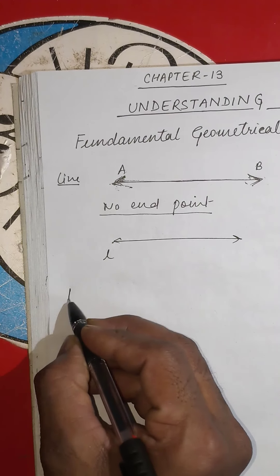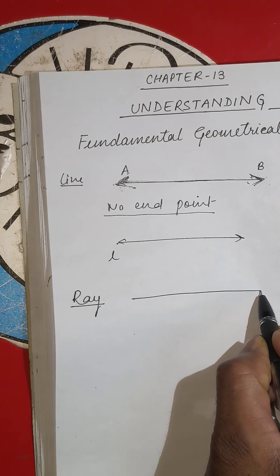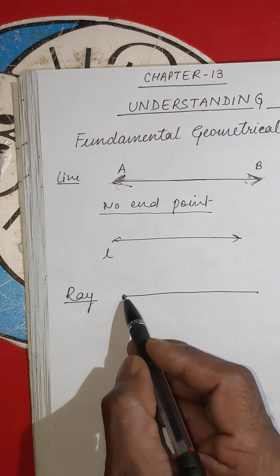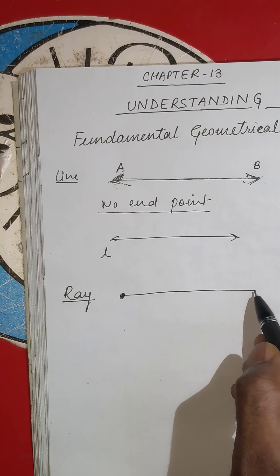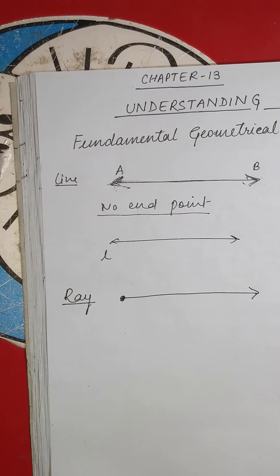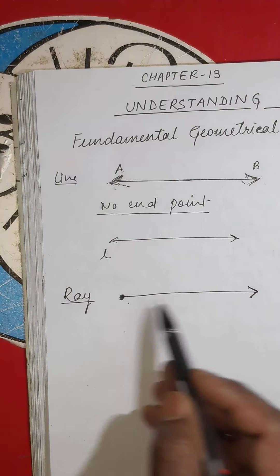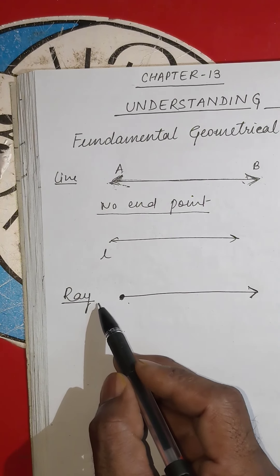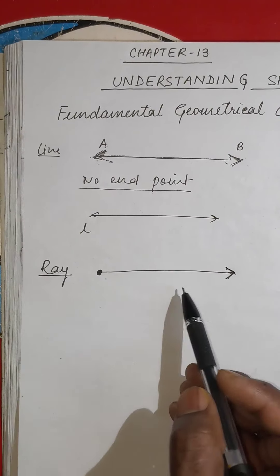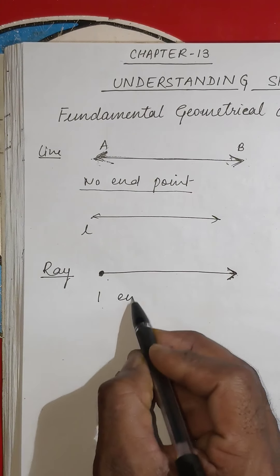The second concept is a ray. A ray is a straight line that starts from a fixed point and extends indefinitely in one direction. So a ray has one end point, and we extend it from that fixed starting point in one direction only.